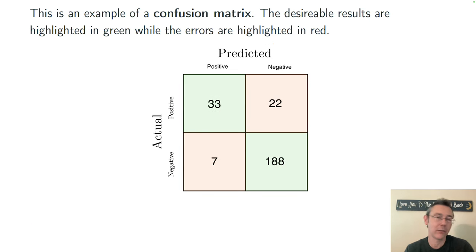So this is a confusion matrix. And clearly, there's two desirable results and two undesirable results.